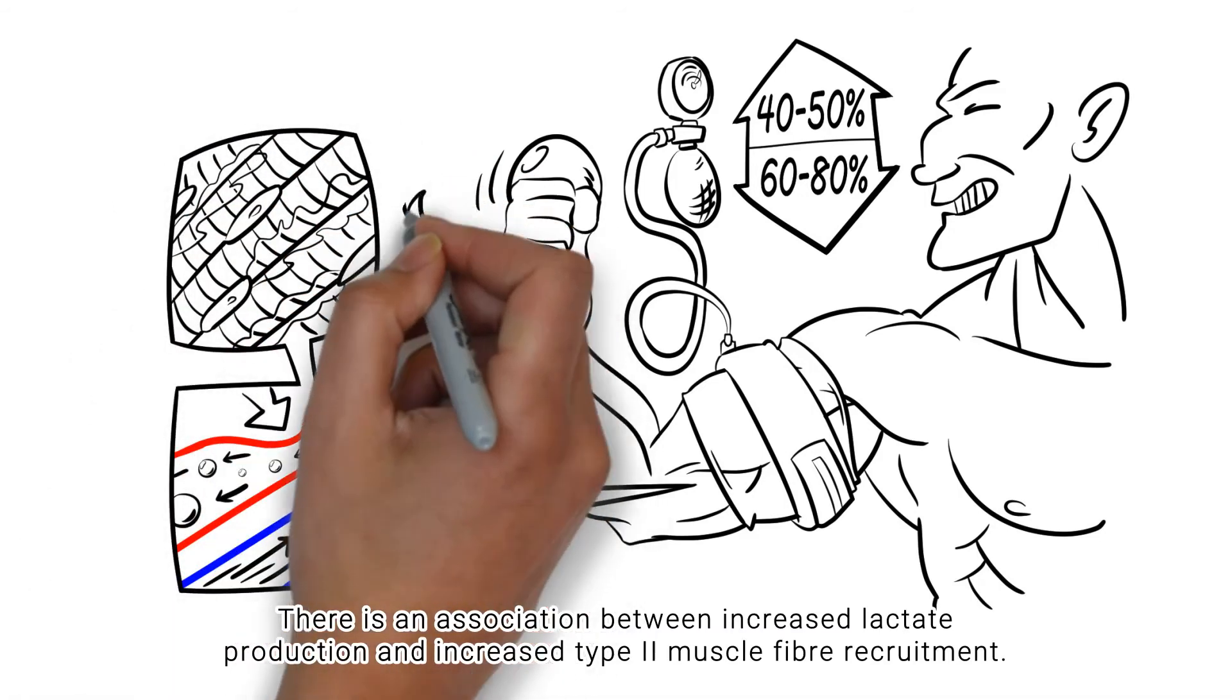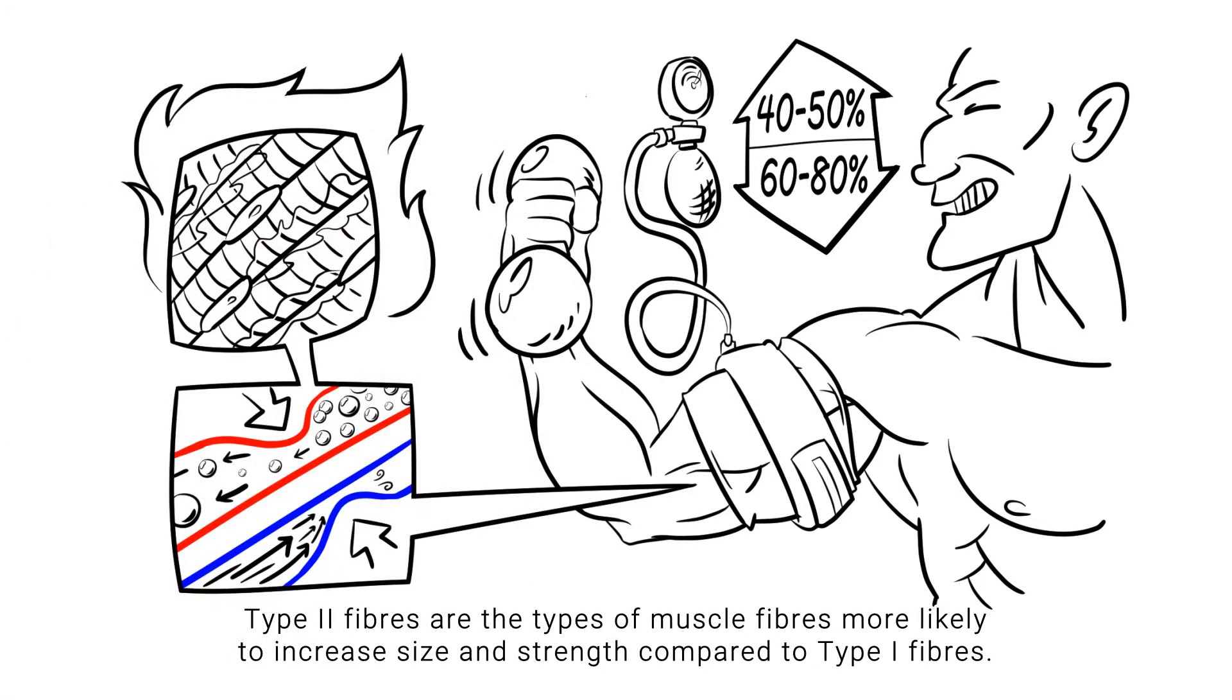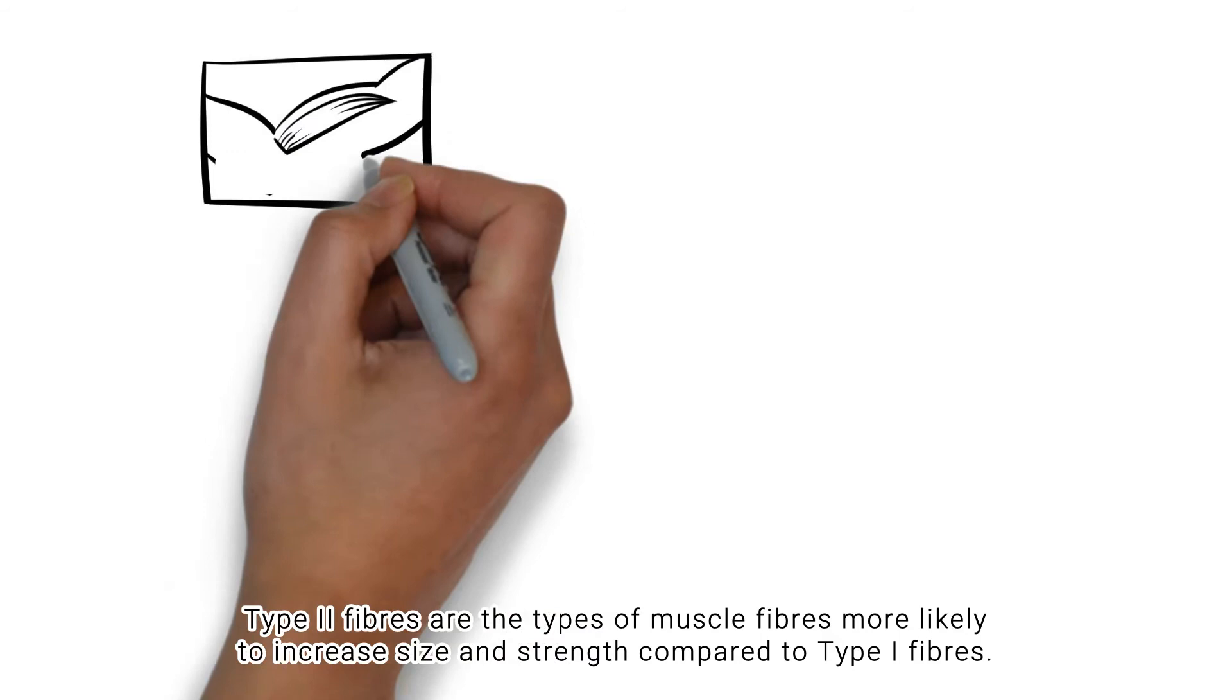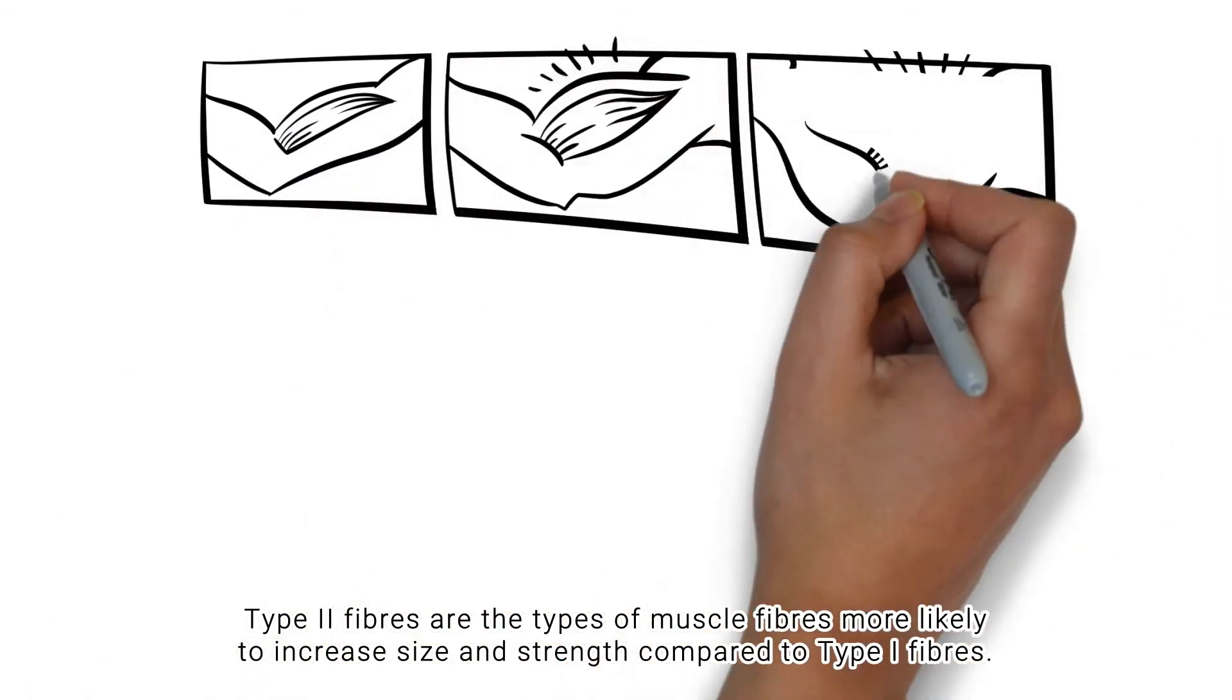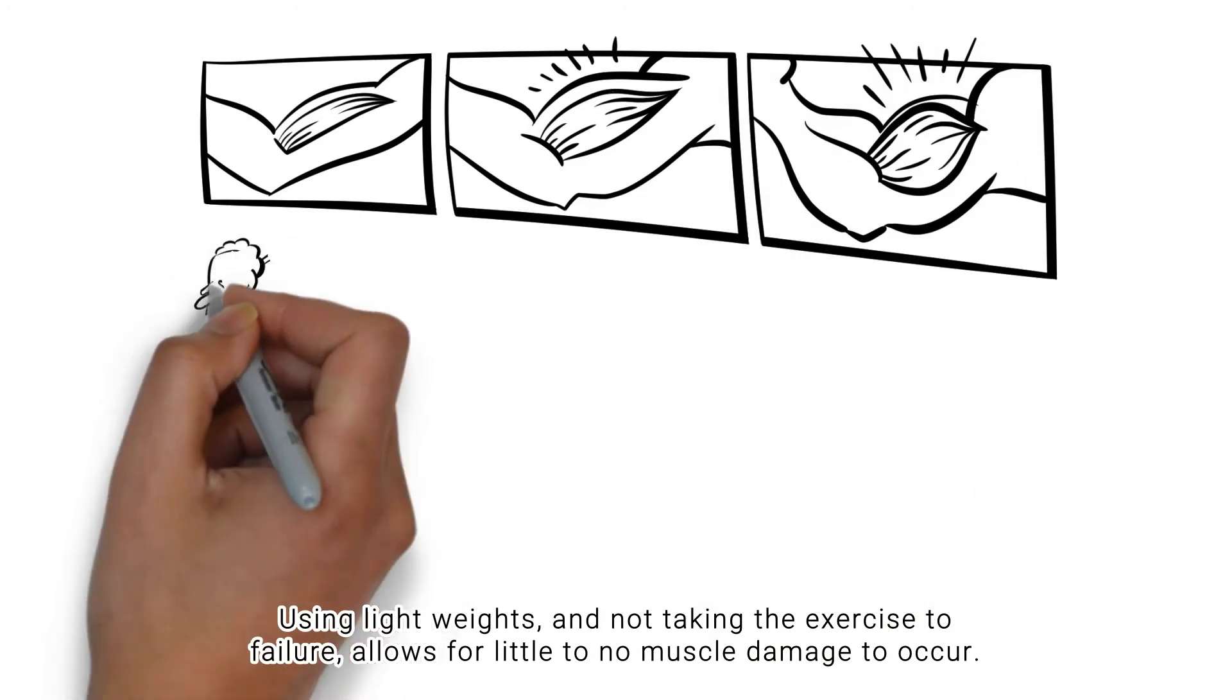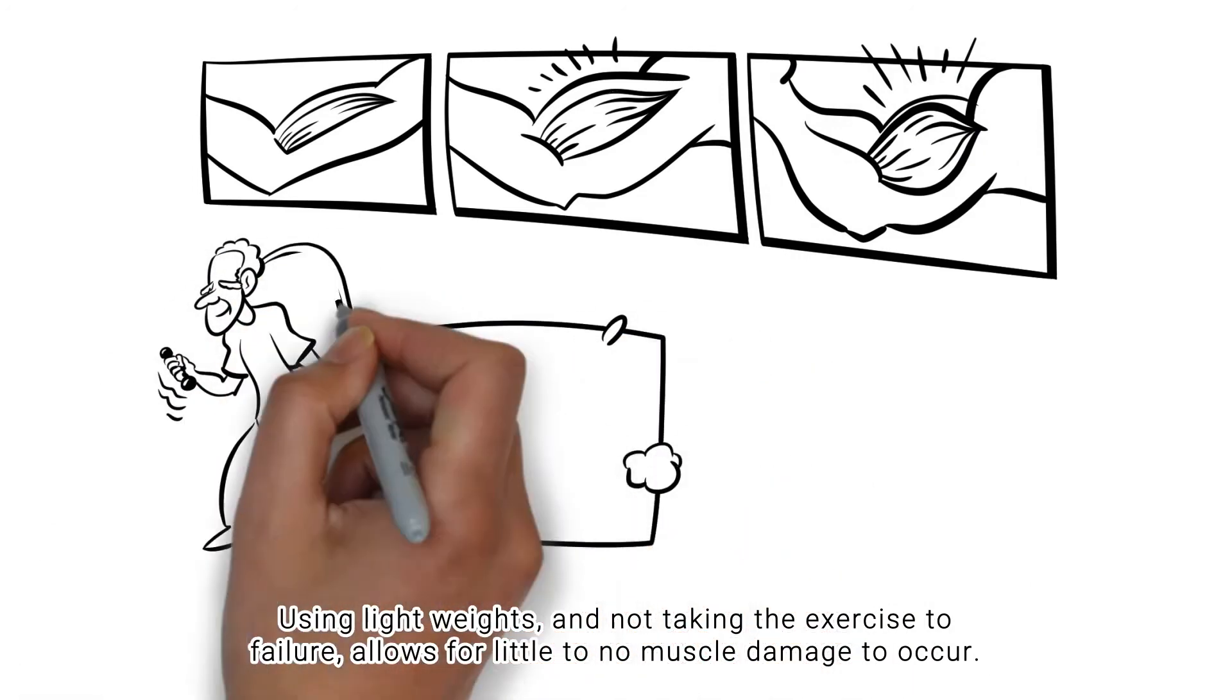There is an association between increased lactate production and increased type 2 muscle fiber recruitment. Type 2 fibers are more likely to increase size and strength compared to type 1 fibers. Using light weights and not taking the exercise to failure allows for little to no muscle damage to occur.